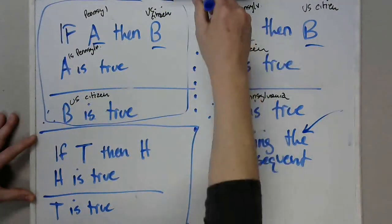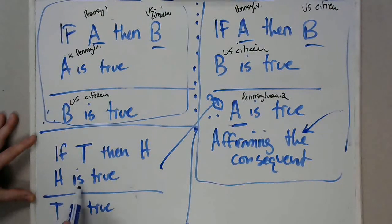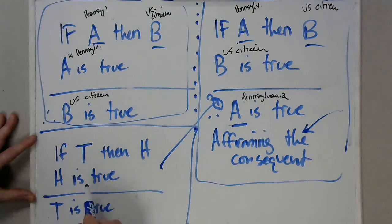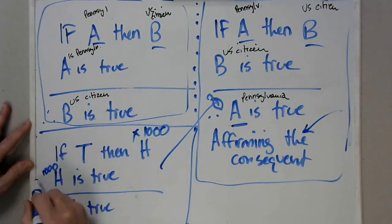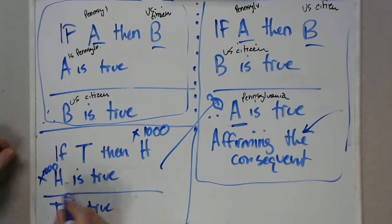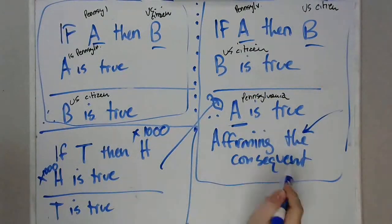Does it then follow that your theory is true? Which form does this look like — the valid or the invalid? Well, it looks like the invalid one. To make the argument 'if the theory is true, then the hypothesis will be confirmed; the hypothesis was confirmed; therefore the theory must be true' commits the fallacy of affirming the consequent. For that reason, no number of repetitions ever adds up to proving the theory is true. Even if you do this a thousand times and a thousand hypotheses are confirmed, it still doesn't logically follow that your theory is true.